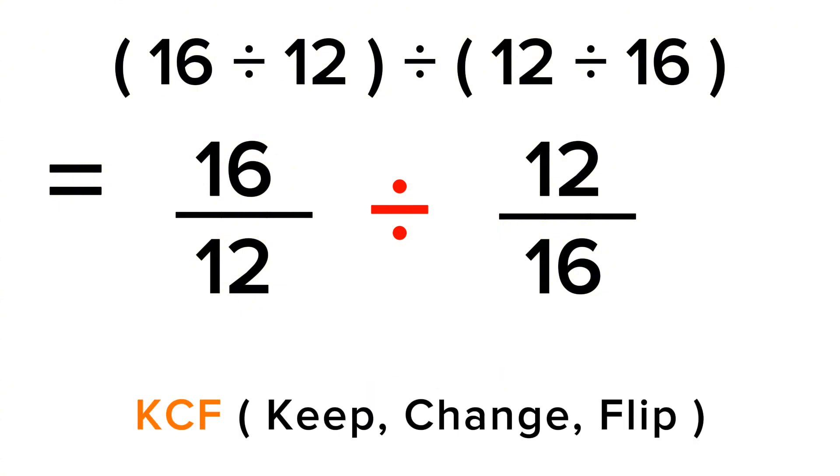Here we'll keep 16 by 12, we'll change the division into multiplication, and we'll flip this 12 by 16. Now let's see how this method actually works. So here we need to first change the division into multiplication as per the change, and we'll flip this 12 by 16 into 16 by 12. So this is actually based on the rule. That's how we have performed.